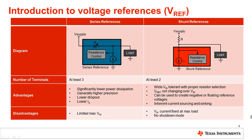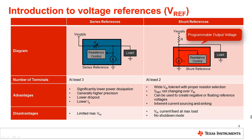VRFs are available in different topologies, and the internal configuration of the device can offer different functionalities. When it comes to circuit implementation, VRFs can be considered in the same manner as a diode, providing a steady voltage either in series or in parallel — the latter of which are often called shunt regulators or shunt VRFs. However, unlike diodes, VRFs can be programmed and provide a wide range of voltage, so long as the conditions for minimum reference voltage and reference current are met.